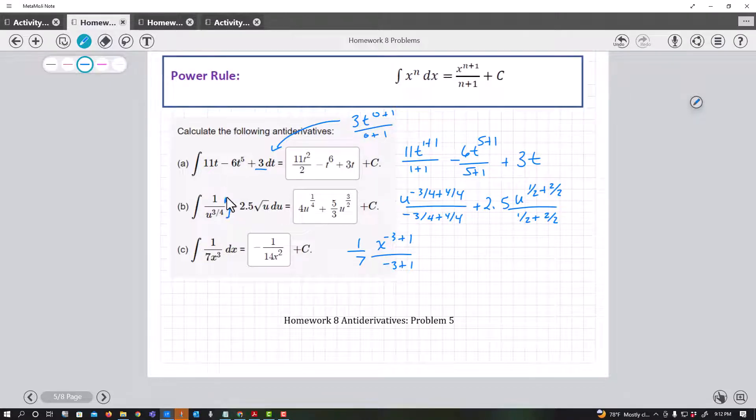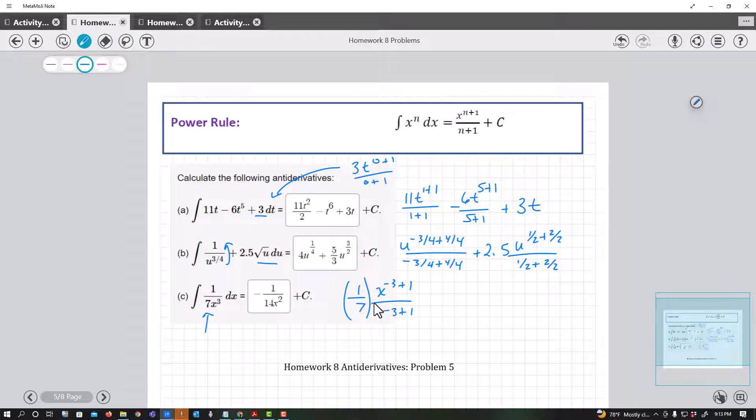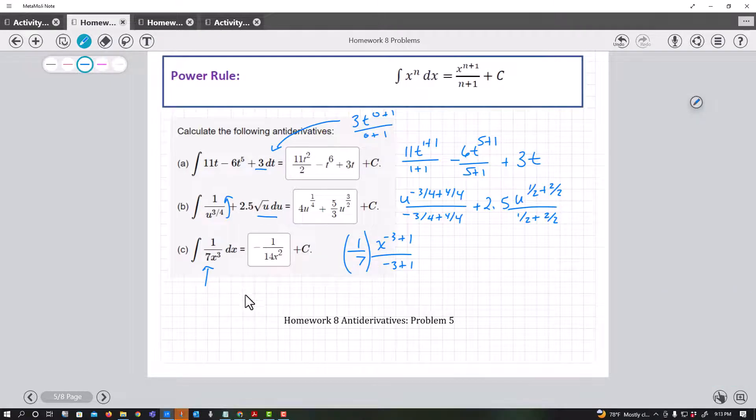Things like this: moving anything from the denominator up becomes a negative exponent. Adding one, changing the square roots to a one half. Now be careful here because students want to always pull that seven out front. I always pull the fraction out and then I actually do the antiderivative to this x to my negative three.